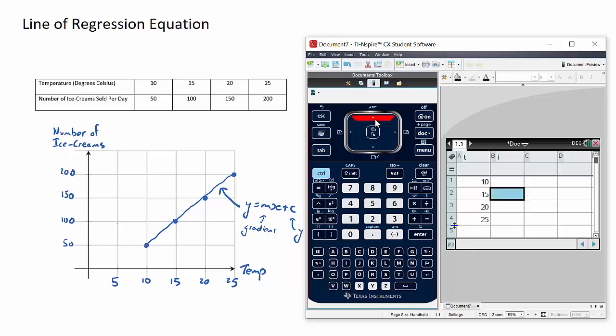Now I go up to the top of the second column and we put in the respective ice cream row values: 50, 100, 150, and 200.